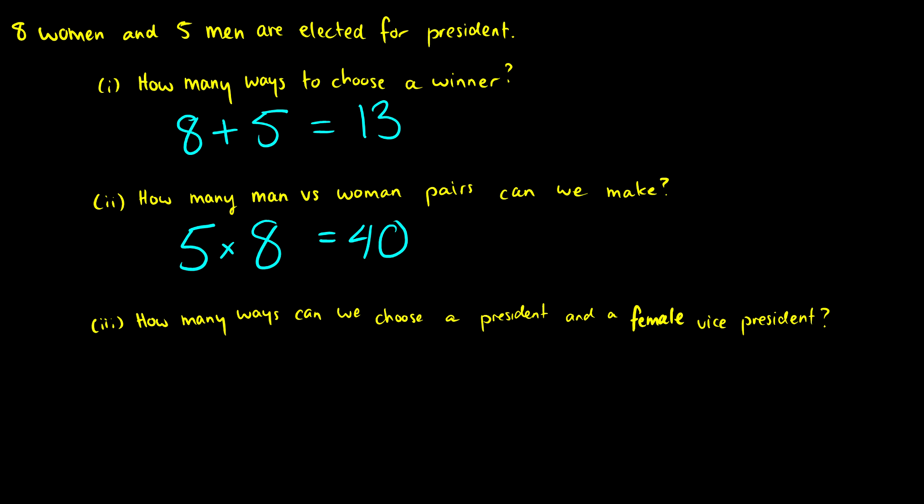Now this uses the rule of product because we're choosing a man out of our pool of five, and then we're choosing a woman out of our pool of five and we're pairing them up. So each man is going to be paired with each woman, or has the possibility to be. So we choose a man and then we choose a woman, so it's five times eight, that's 40 possible pairs.